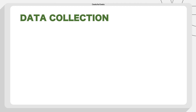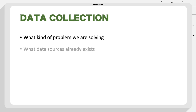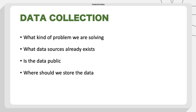With that said, let's understand the pathway. First, when working in machine learning, we need to collect data — data is the most important thing. You need to think about what kind of problem you are solving, what data sources already exist, whether it is public data, and where you should store it. You could have terabytes of data, so you need an efficient plan for storage and need to verify the credibility of your data.